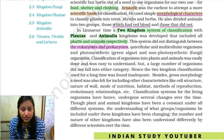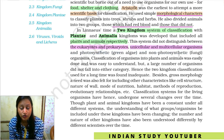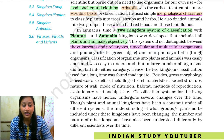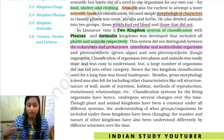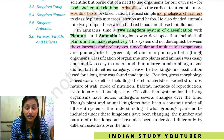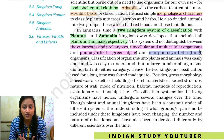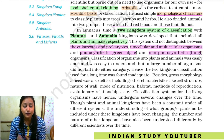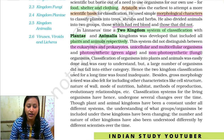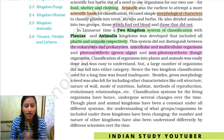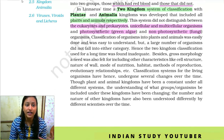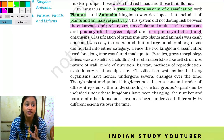In this two kingdom system, there was no distinction made between unicellular and multicellular organisms. There was no classification for photosynthetic organisms like green algae or non-photosynthetic organisms like fungi. There were only two broad categories: plant and animal. There were no criteria to further classify organisms within these categories.